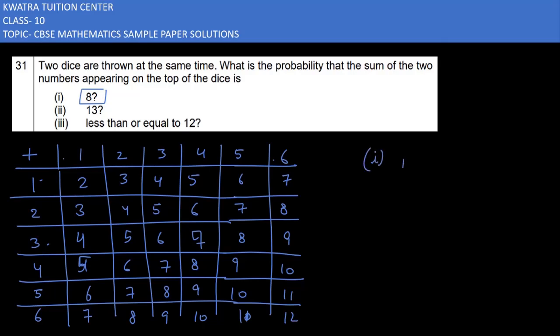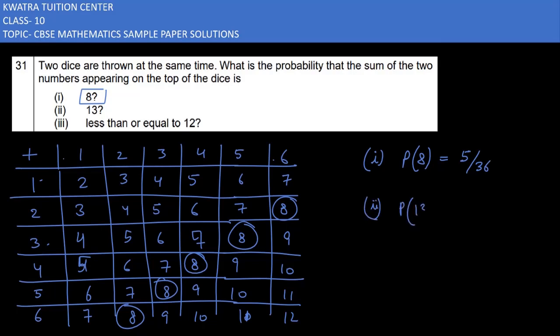So, sum 8 will appear — looking at which combinations give sum 8, there are 5 such outcomes: (2,6), (3,5), (4,4), (5,3), and (6,2). The total number of outcomes is 36. So the probability of getting a sum of 8 is 5 over 36.